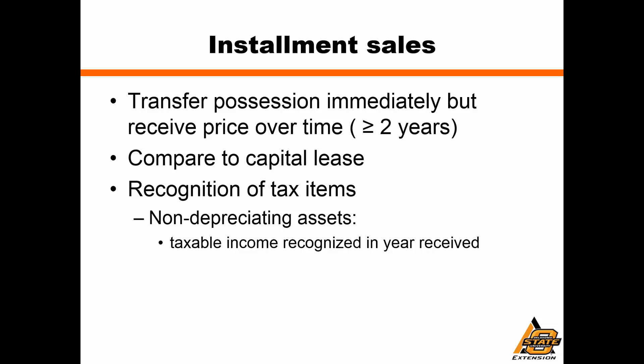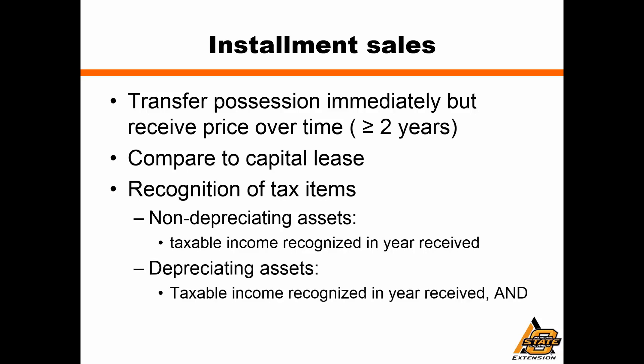For depreciating assets, taxable income is also recognized in the year it's received, but what's very different is that all depreciation recapture occurs in year one of the contract. So whether we have a five- or ten-year contract, all that depreciation gets recaptured in year one. For depreciating assets, that depreciation recapture can be a strong factor in deciding that we don't want to use an installment sale.